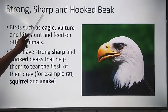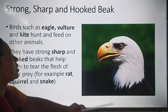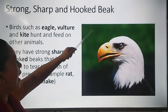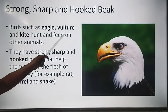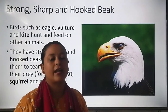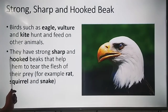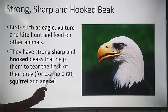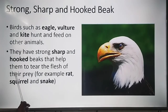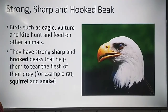Next is the strong, sharp, and hooked beak. As you can see in this picture, this is the beak of a vulture, which is very strong, sharp, and hooked. Birds such as eagle, vulture, and kite hunt and feed on other animals. They have strong, sharp, and hooked beaks that help them to tear the flesh of their prey, such as rats, squirrels, and snakes.